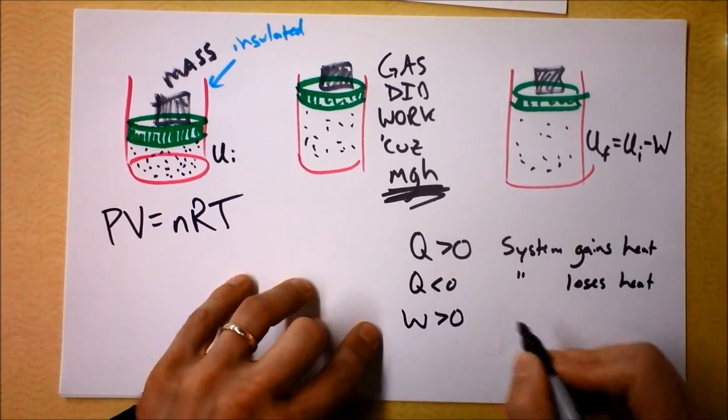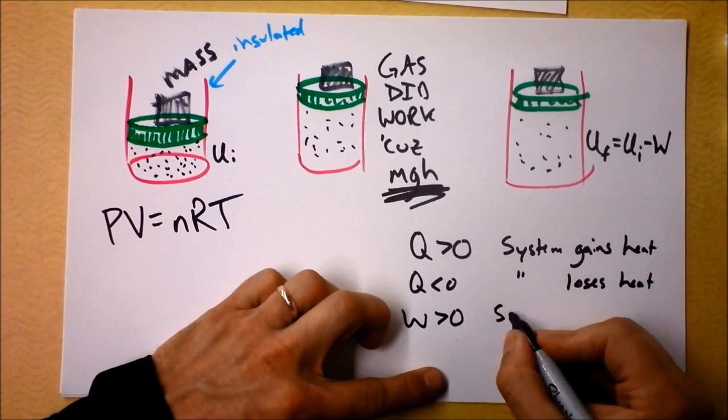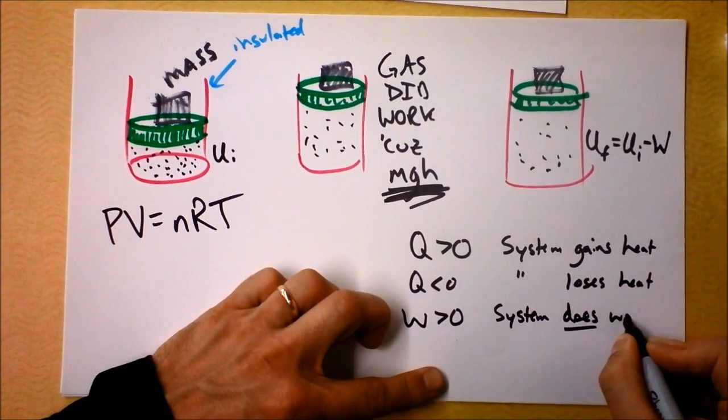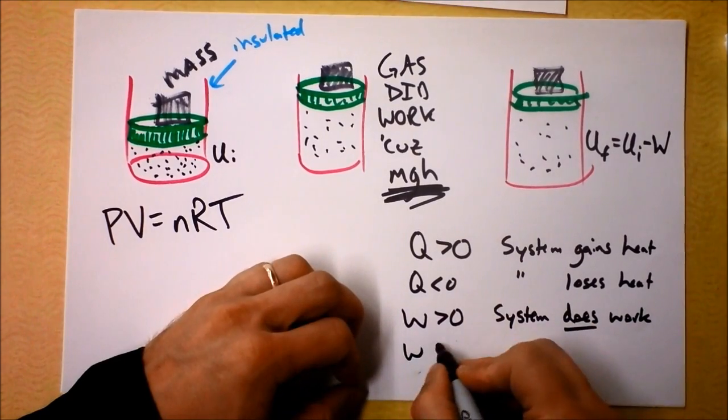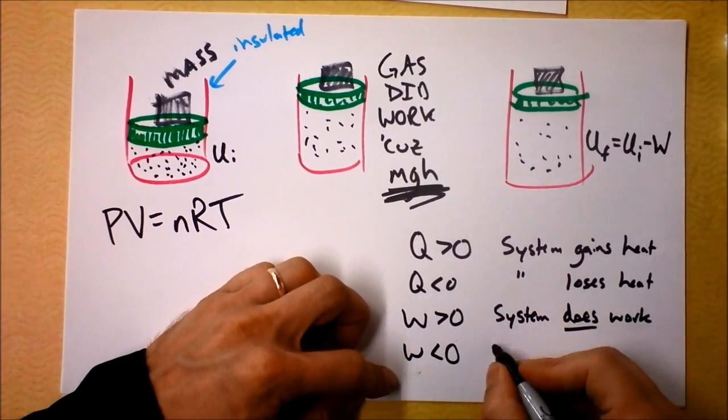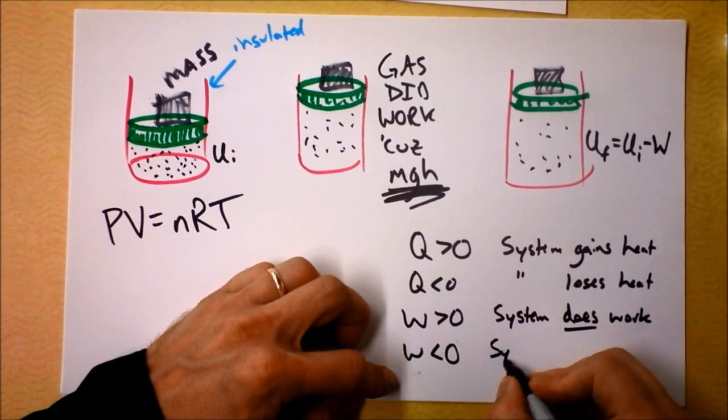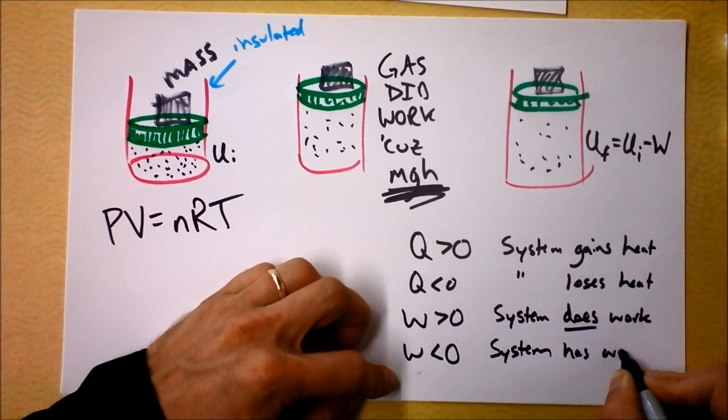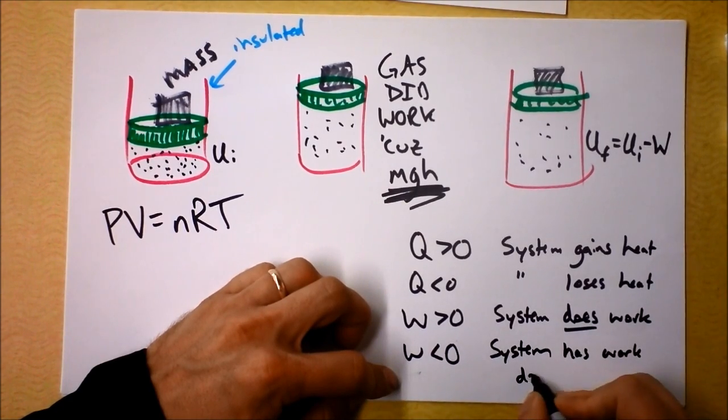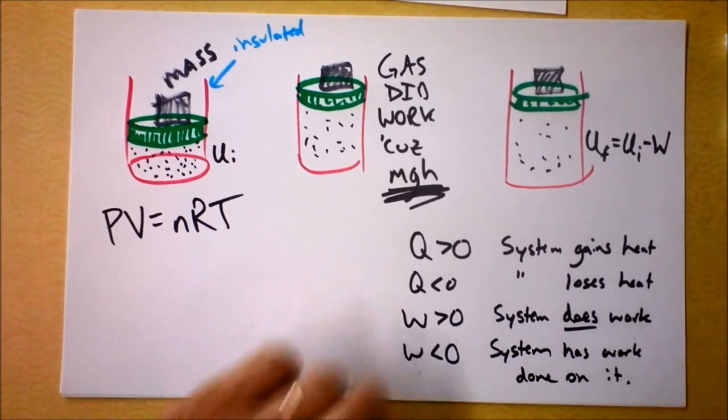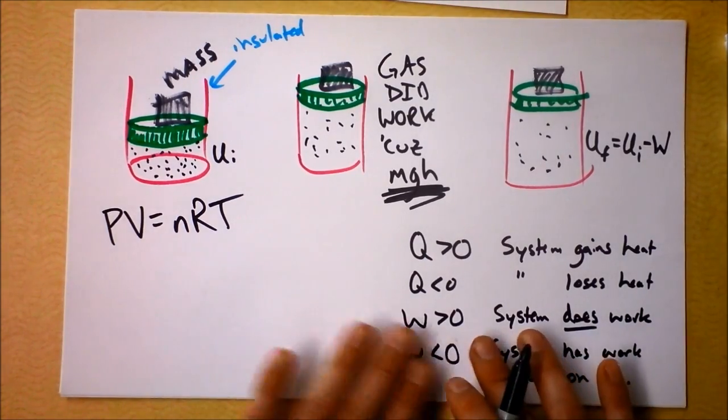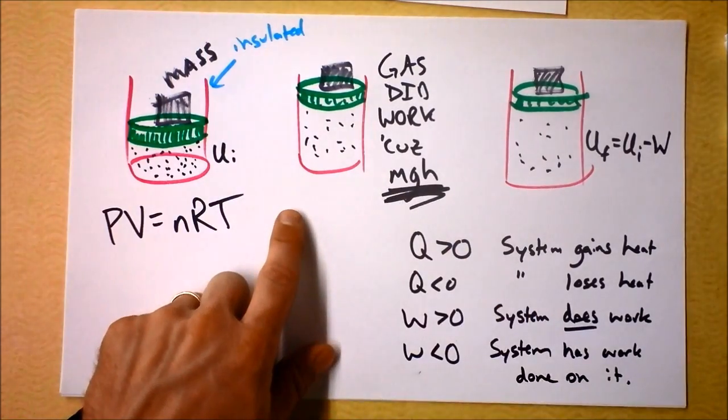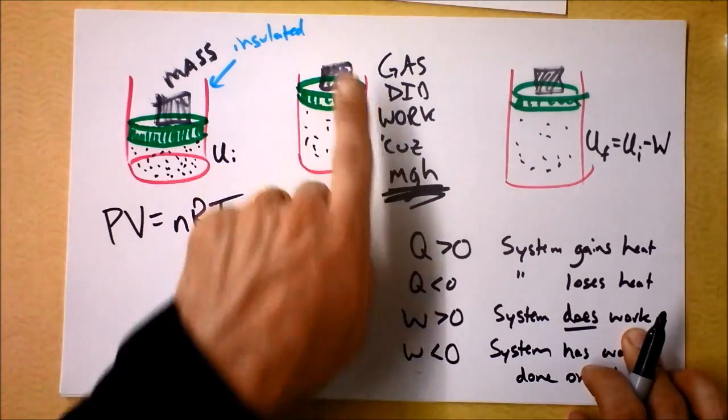So let's see, Q greater than zero means system gains heat. Q less than zero, system loses heat. What about work? Work greater than zero, a positive work means that the system does work. And a work less than zero means that the system has work done on it. Okay, so in this case, work is positive or negative. When the mass goes up, then the system has actually done positive work.